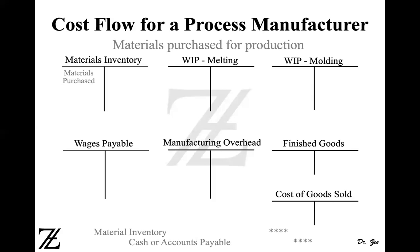Now we're going to start with some journal entries and T accounts. The first one is materials purchased for production. When you purchase material, you either pay cash or buy on credit. If you paid cash, you credit cash; if you purchase on account, you credit accounts payable. Because materials inventory is increasing, which is an asset, you debit your material inventory account — also called raw material account. So material purchases are debited in your material inventory account.